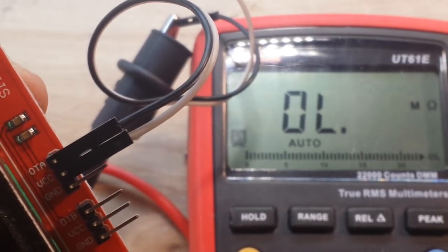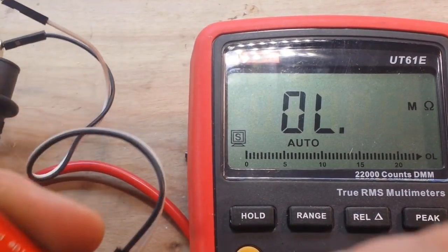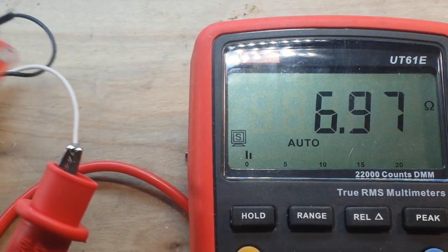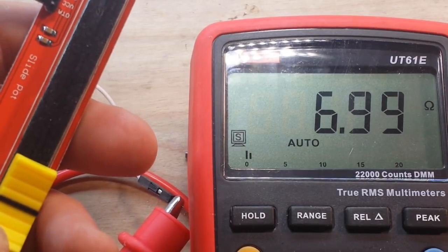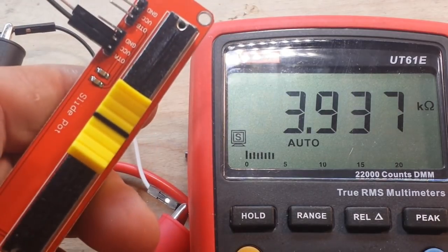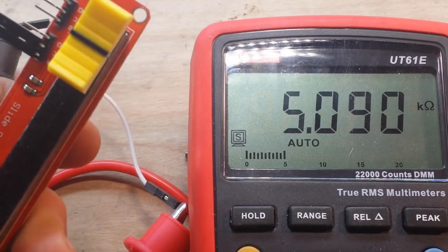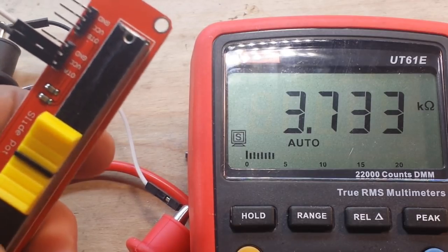They're basically the same. Now all I need to do - we lost the contact here one moment. I got these alligator grippers on my leads and they're kind of crummy. Okay, so with the pot fully in one direction we're reading 6.7 ohms, and at about 50 percent we're reading 4 ohms.